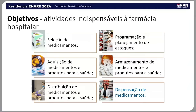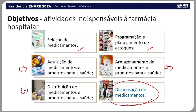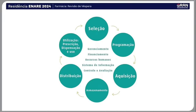Os objetivos da farmácia hospitalar são: uma boa seleção de medicamentos para a instituição, programação e planejamento dos estoques, processos de aquisição do medicamento, armazenamento correto dos medicamentos — principalmente lembrando dos termolábeis —, a distribuição e a dispensação. Isso é praticamente o ciclo da assistência farmacêutica. Tudo começa na seleção com padronização — padronizar é o ato de início da seleção dos medicamentos, e por aí vai todo o ciclo da assistência farmacêutica.